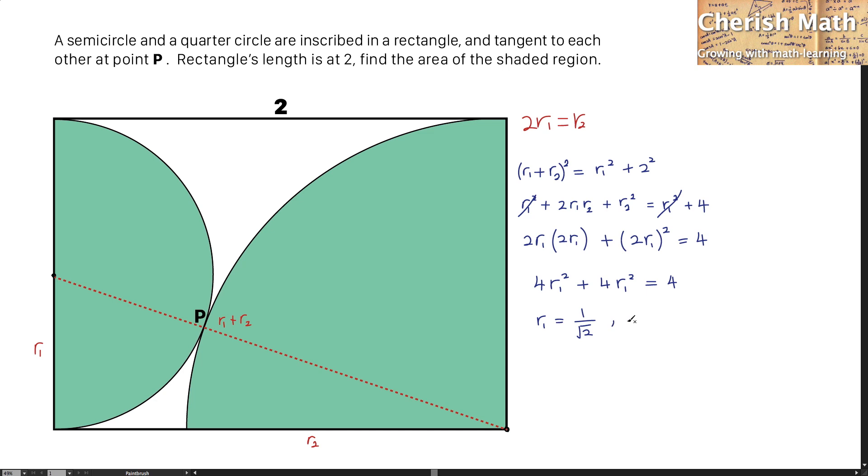For the value of R2, that is exactly twice the value of R1, and that would be 2 divided by the square root of 2. To work out the area of the shaded region,